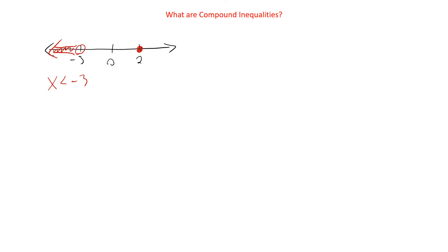And we're going to go this way. So we have these two. This one is x is greater than or equal to two. So this compound inequality has both of them on the same graph. Since it only has to be in one or the other, we put a word in the middle, and that word is pretty easy — it's just OR. This graph shows us that either x is less than negative three, or x is greater than or equal to two.